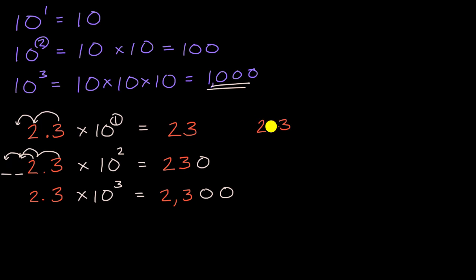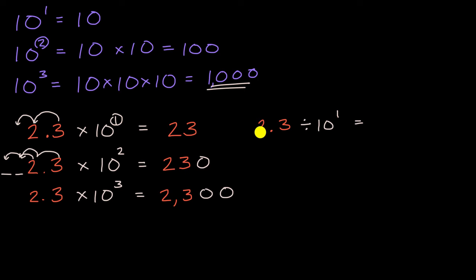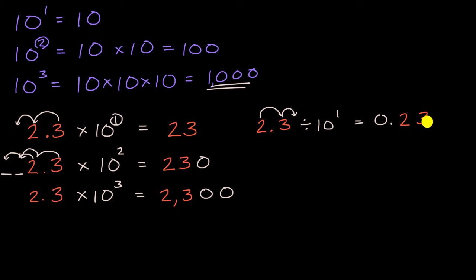For example, what is 2.3 divided by 10 to the first power? 10 to the first power is just 10, so when we divide by 10, all digits shift one place to the right. The two moves to the tenths place, and the three moves to the hundredths place. So 2.3 divided by 10 equals 0.23 — two is now in the tenths and three is now in the hundredths.